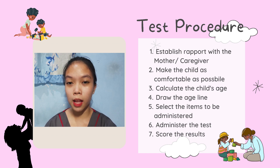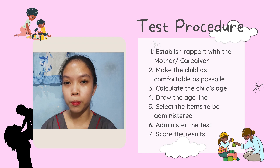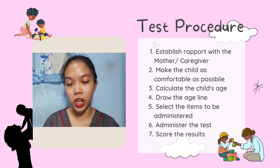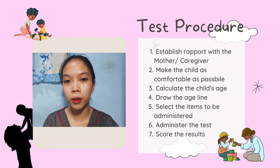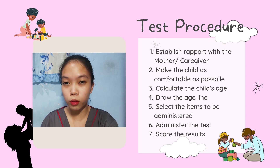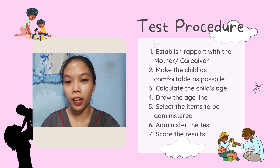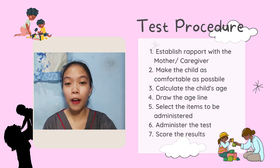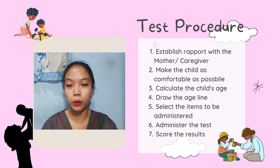Now let's go to the MMDST procedure. First, establish rapport with the parents or guardian. Second, make the child as comfortable as possible to obtain the child's cooperation. Third, calculate the child's age — we need to ask the guardian for the child's birth date. We will calculate the exact age using the formula on the screen, then draw a straight line in the test form according to the calculated age.